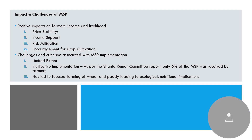Another challenge is focus farming — people are focusing only on wheat and paddy because MSP for those is more secure. This is disturbing the ecological balance, as farmers are not growing ragi, millets, and other crops. Even though MSP exists for ragi and millets, not every crop is equally included in the National Food Security Act, so the government does not procure them. This creates ecological and nutritional implications.